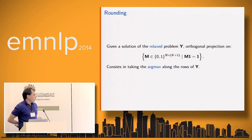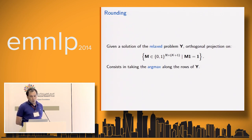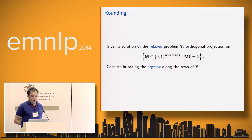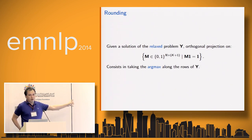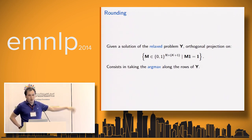Given a solution Y of the relaxed problem, we take the orthogonal projection onto the set of indicator matrices to obtain labels for training our supervised classifiers in the second step. This consists of taking the argmax along the rows of Y. Note this does not give a solution to the original problem because some constraints may be violated during this rounding.